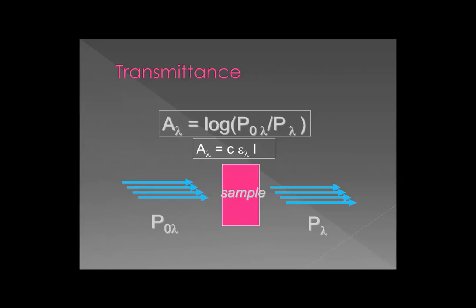Ultimately, using Beer's Law: absorbance at wavelength lambda equals the concentration of the sample — usually in molarity — multiplied by the molar absorptivity at that wavelength, epsilon sub lambda, times the sample path length L, which is usually one centimeter.